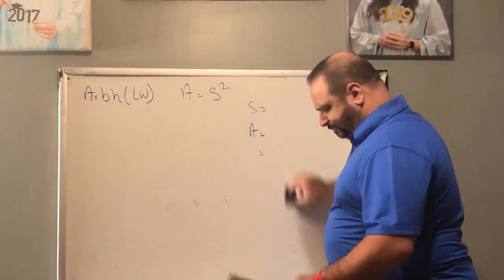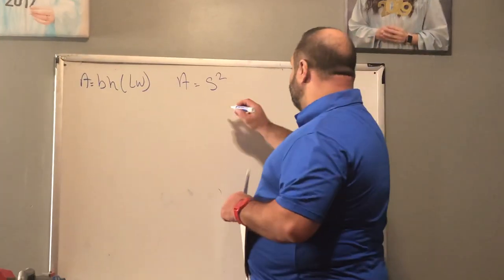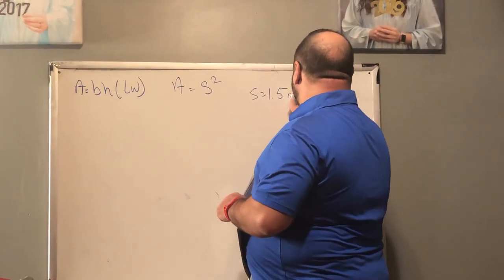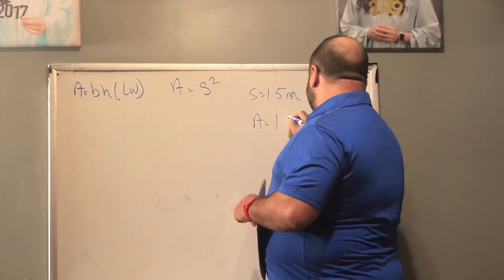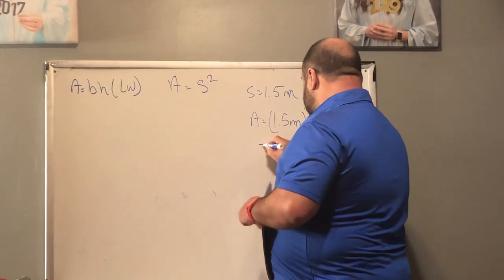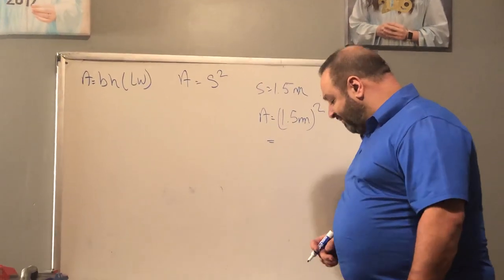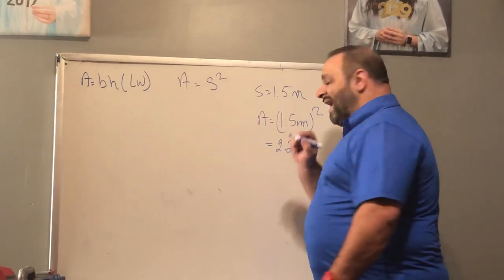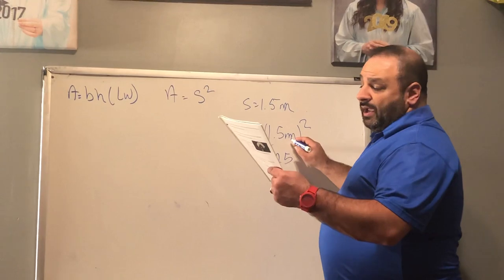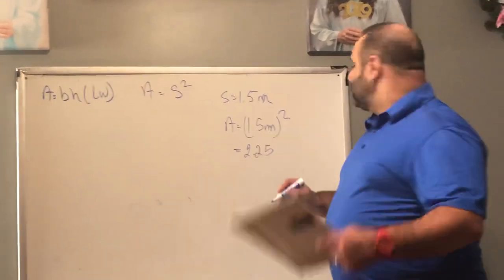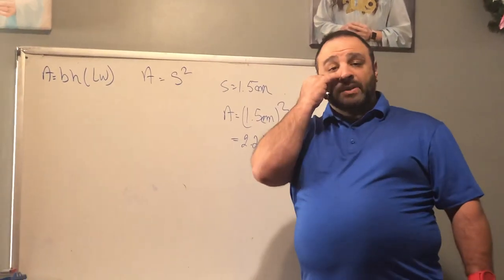Number seven: S = 1.5 meters. Plugging into our area formula, A = (1.5)² = 1.5 × 1.5 = 2.25. Our answer is 2.25 centimeters squared.